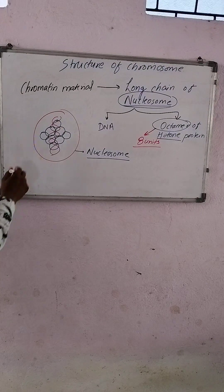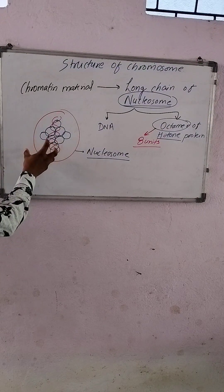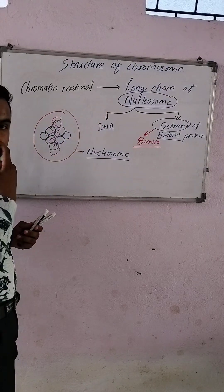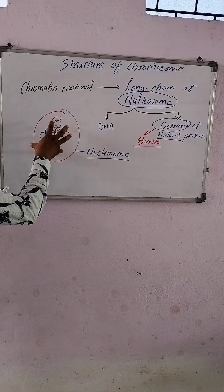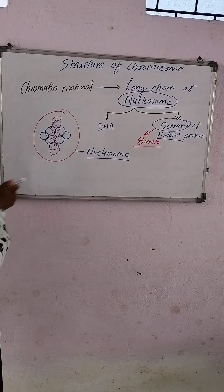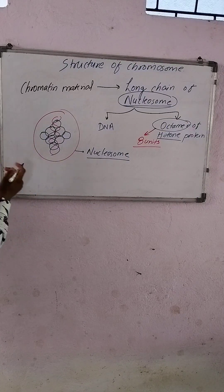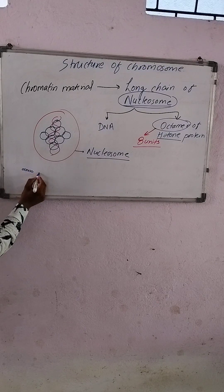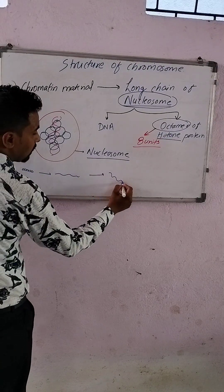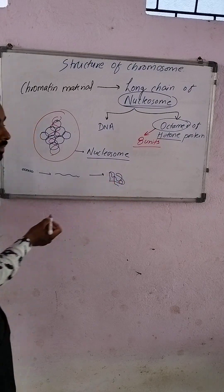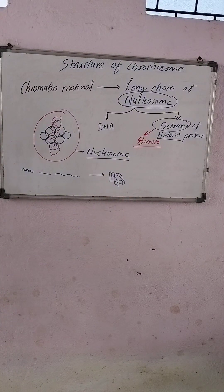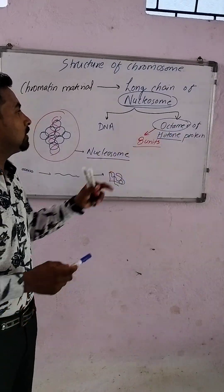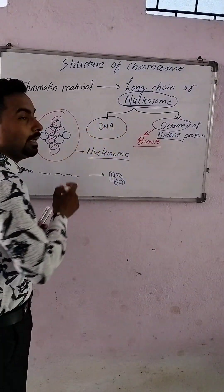When these nucleosomes join together, they form a bead-like structure that is chromatin reticulum. When we minimize the size, they come together like this, and ultimately they become the chromatin reticulum. This is the simple structure: histone octamer joined with DNA.